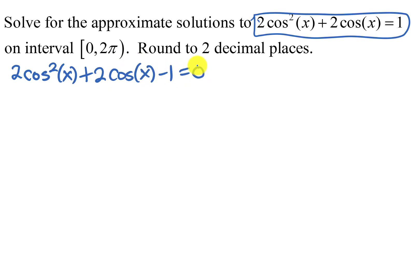If we tried to factor that, the first terms could be 2 cosine x and cosine x, but the last terms would need to be plus or minus 1, and neither of those gives the right middle term. So it doesn't factor.